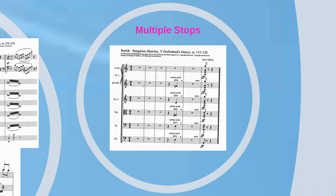It is possible to play on two strings at the same time, producing an effect called a double stop. Chords can be played in arpeggio on three or four strings — triple stop, quadruple stop. A complete treatment of multiple stops is beyond the scope of this lecture. Multiple stops are relatively rare in orchestral writing, since it is usually better to divide a string section rather than have them try to play a multiple stop in tune. However, Bartók's Hungarian Sketches clearly calls for a quadruple stop in the violins and a triple stop in the violas and cellos.